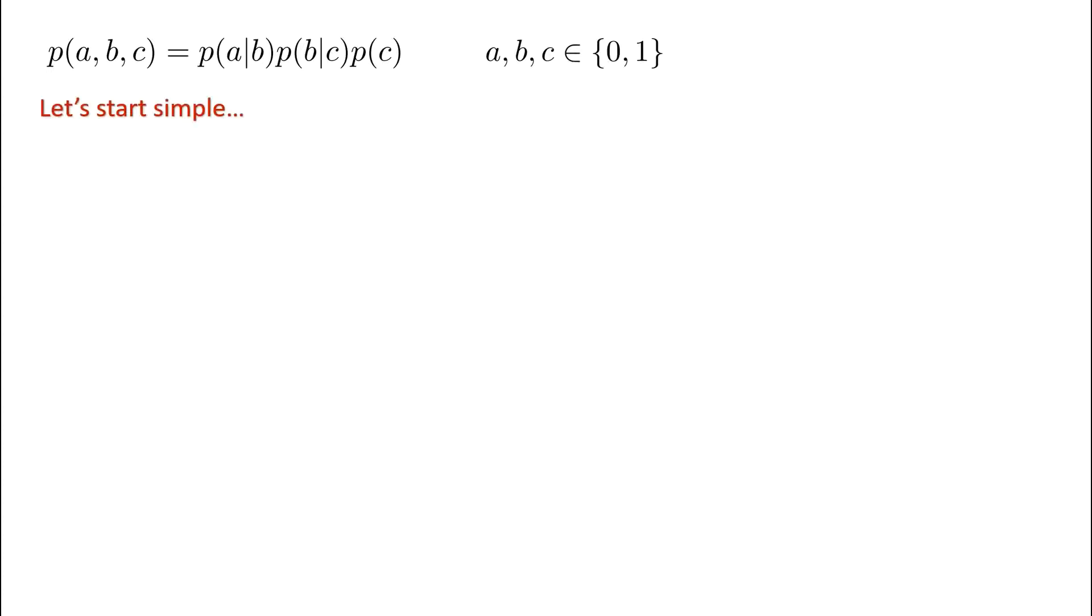Now, the question might be a little confusing if you haven't answered questions of this form before. Let's start a little simpler than the actual question being asked. On the left-hand side here, we'll consider some distributions. And the right-hand side will specify the minimum number of parameters we require to define that distribution.